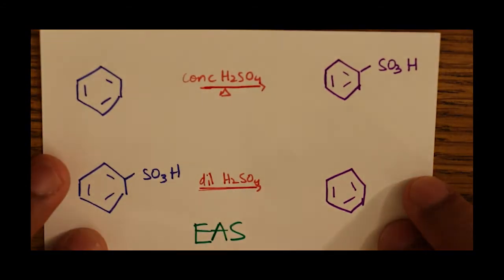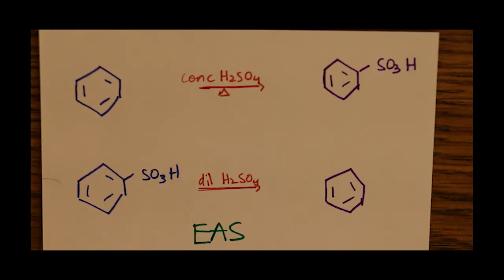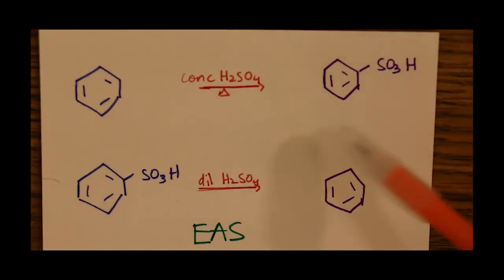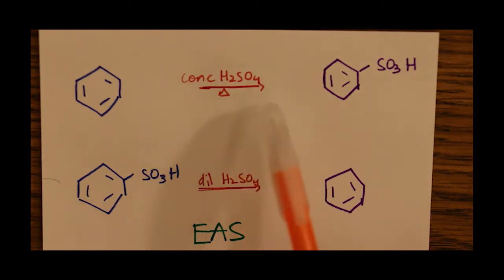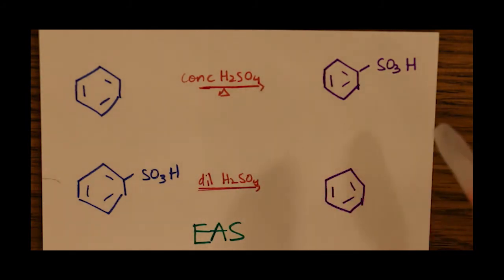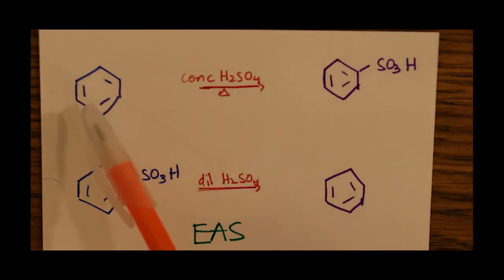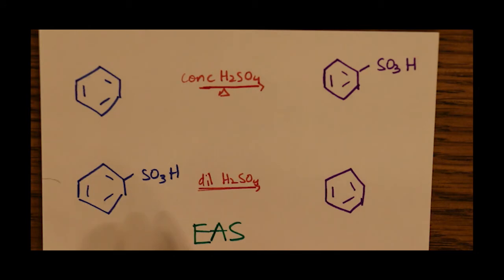Our next form of electrophilic aromatic substitution is called sulfonation, where we start off with a benzene ring and end up with benzene sulfonic acid. This takes place in the presence of concentrated fuming sulfuric acid, because there's heat involved. And if we want to reverse the reaction to get our benzene back, we just add dilute sulfuric acid to the benzene sulfonic acid.